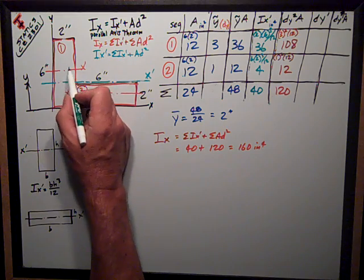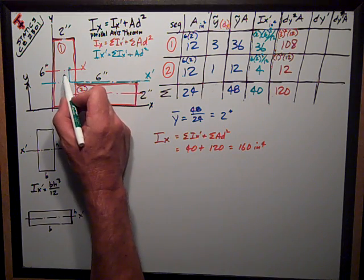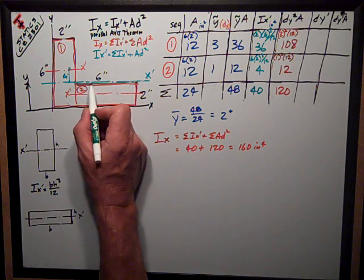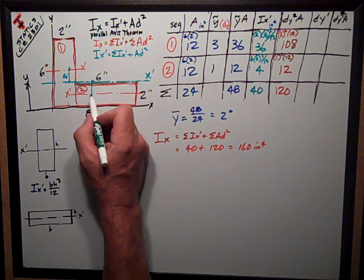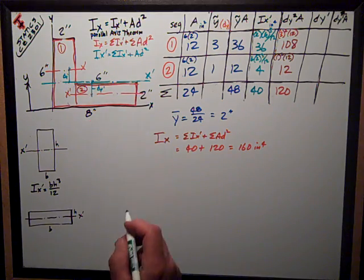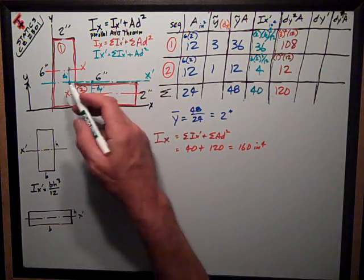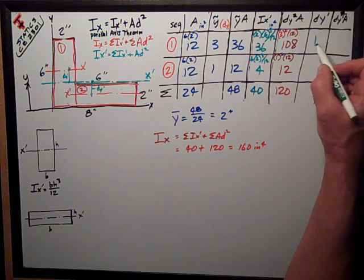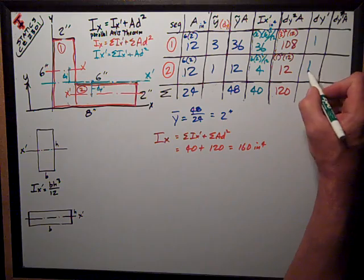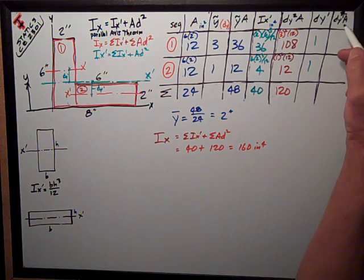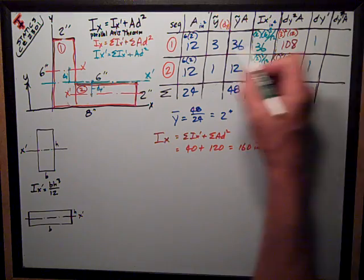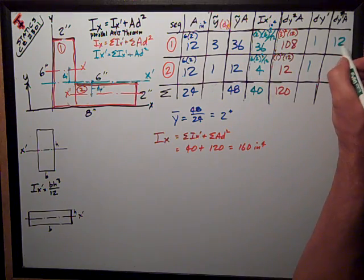In this case, that's that distance for that segment. You can call it dy-prime. And for rectangle number two, it's that distance, dy-prime. So, for both of those, it's just one inch from three to two and from one to two. And square that, one squared times the area, both of these are going to be twelve.